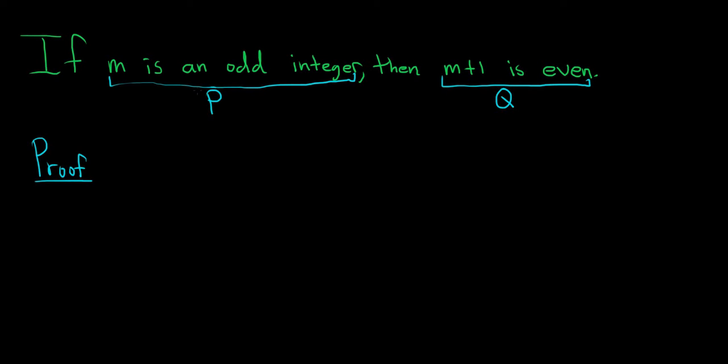You assume P and then via some steps you show that Q is true. Once you've done that you've proven it, so it's always true no matter what. It is considered an absolute truth in mathematics. Let's start our proof by writing down our assumption which is P.